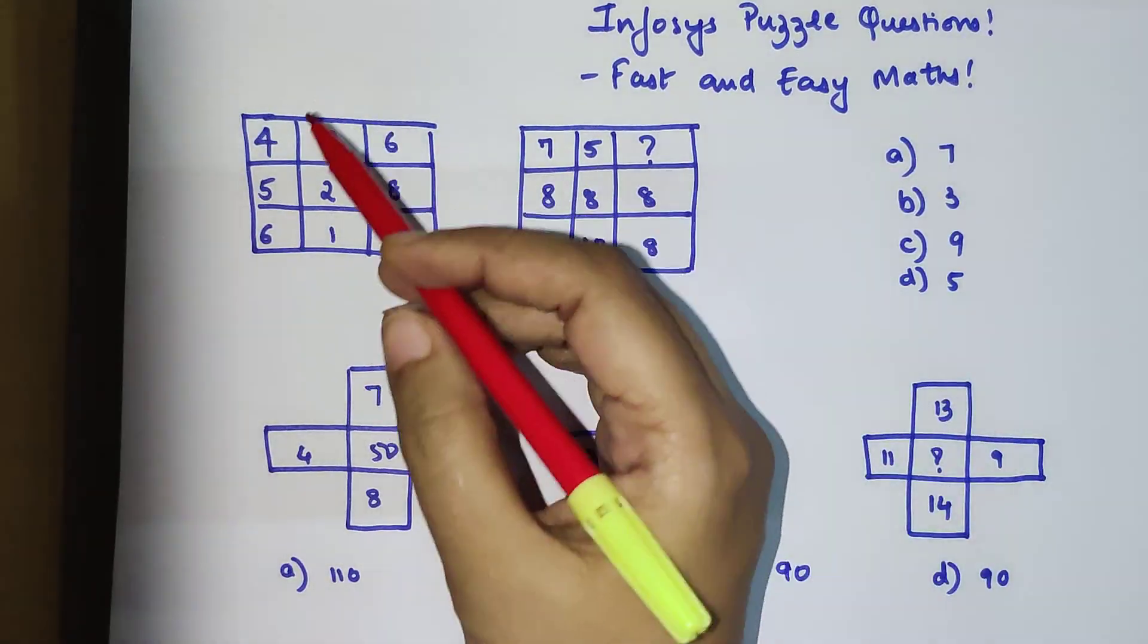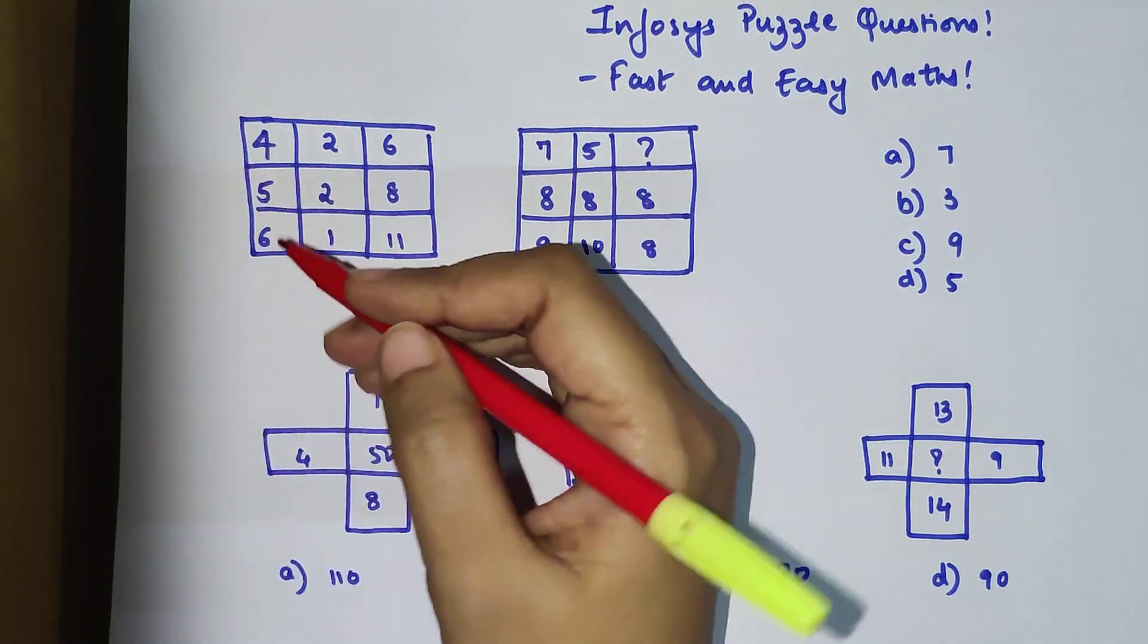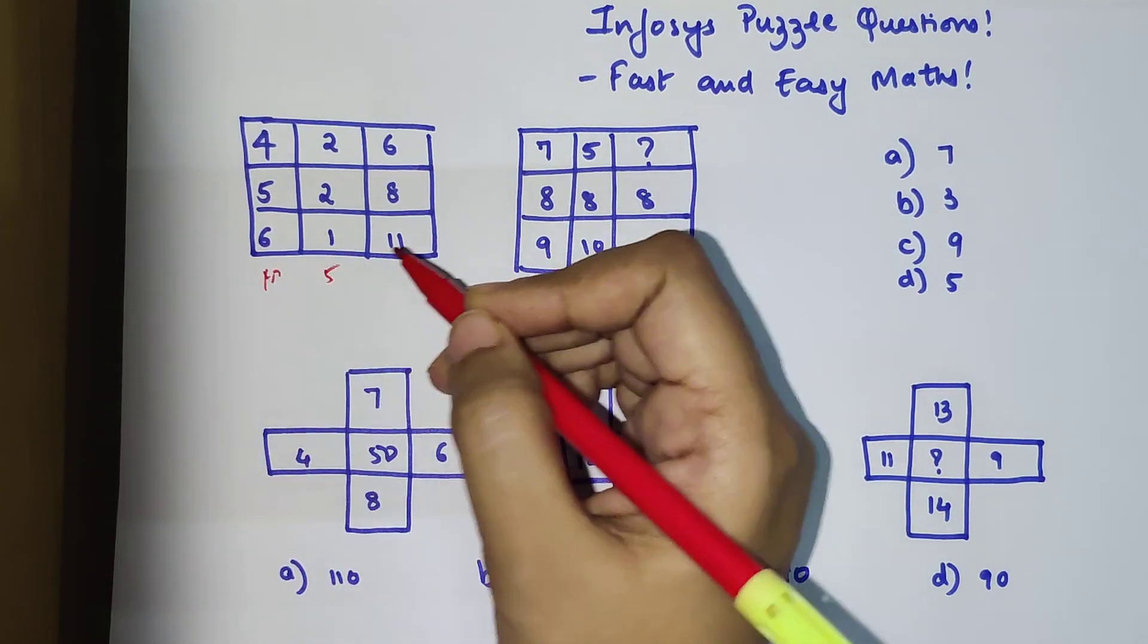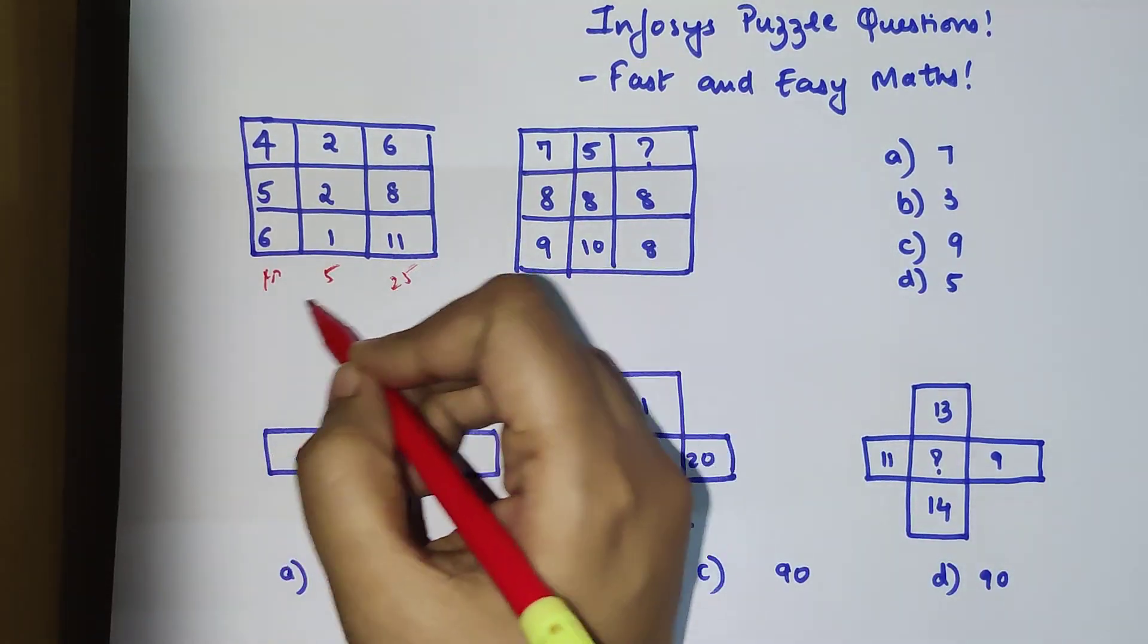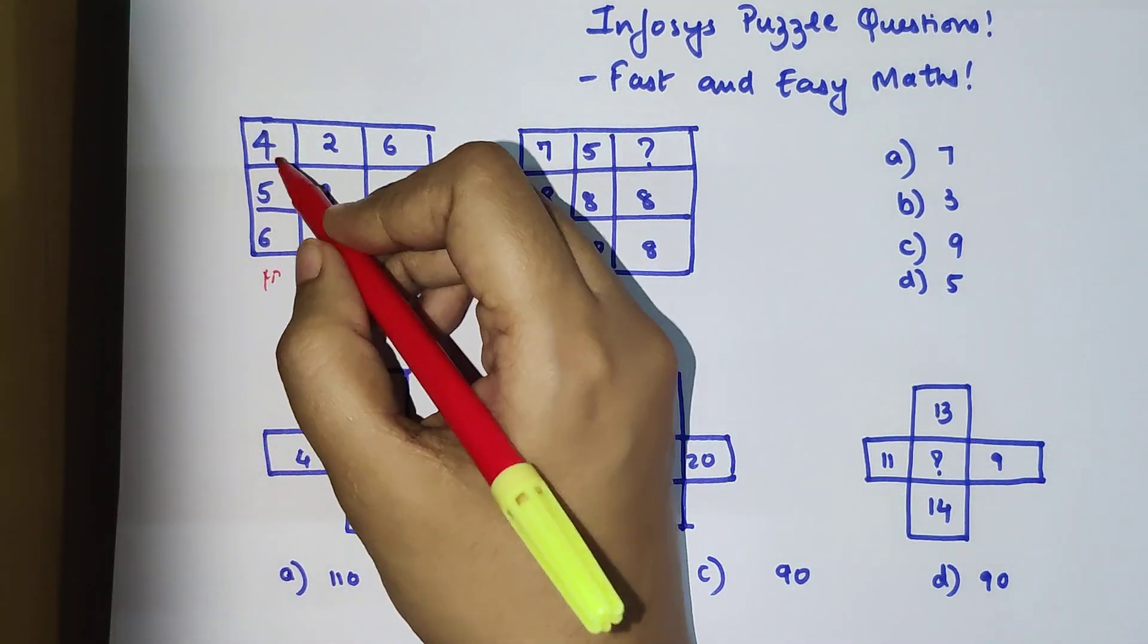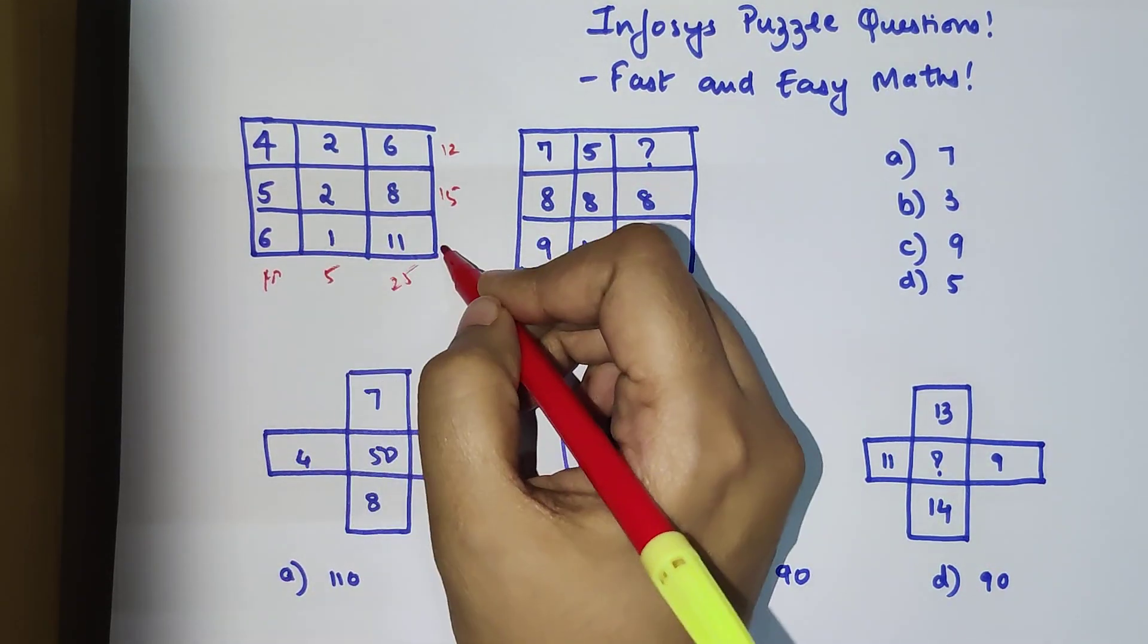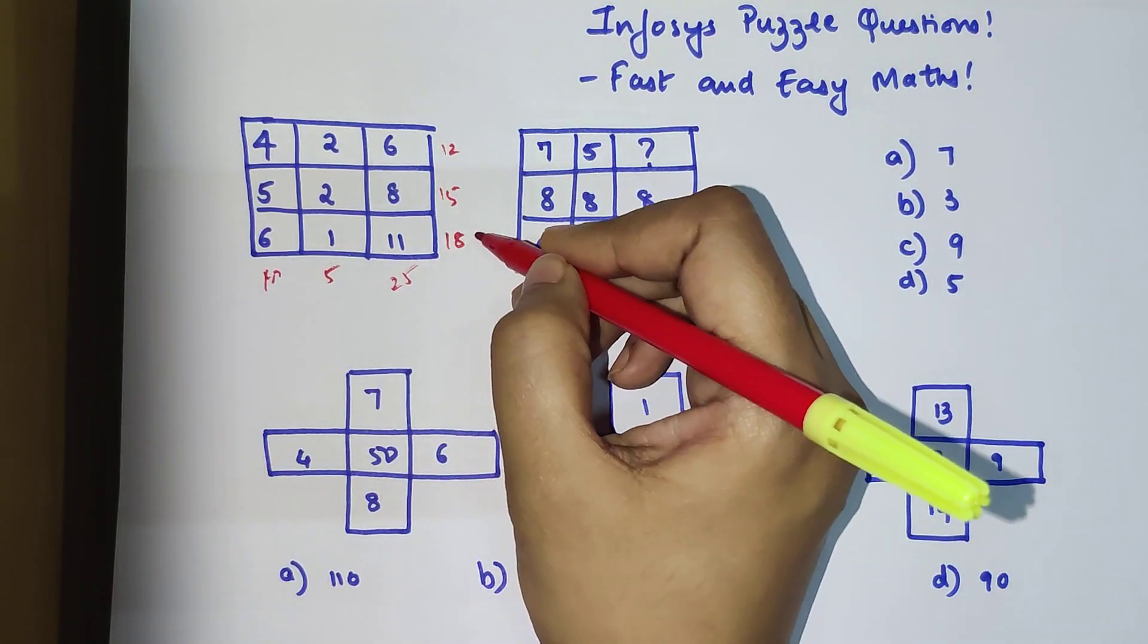When you have something like this, we first try something which is very simple. We try to add all of them. If I add, I get 15, then 5, then 19 to 25. You are finding a connection is a bit tricky. So let's try to add all of these horizontally. When I add that, I get 12, then 15, and then 18. This looks like a 3 table.